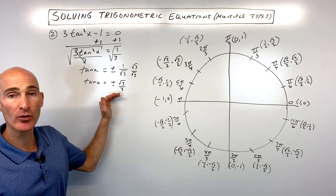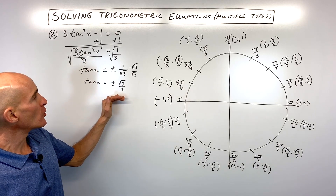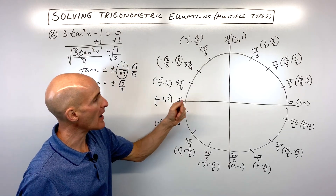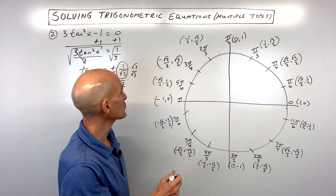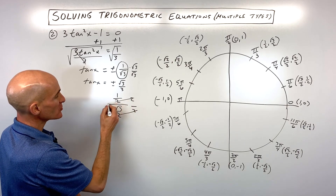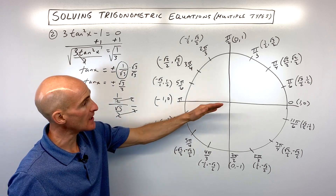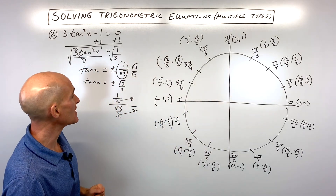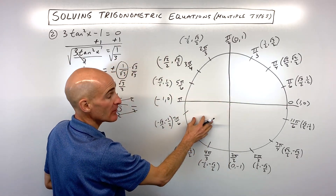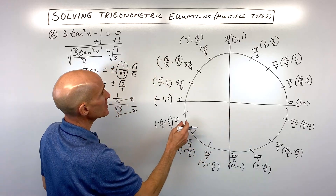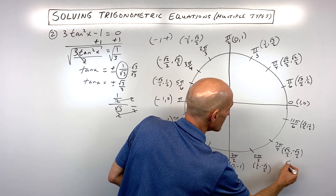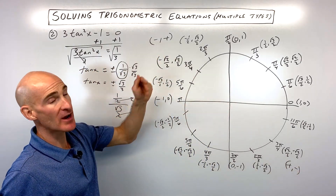On the unit circle, tangent is the y-coordinate divided by the x-coordinate. We need to find where tangent equals 1/√3, or rationalized, √3/3. At π/6, you get (1/2) ÷ (√3/2), and multiplying numerator and denominator by 2 gives 1/√3. So it's a π/6 or 30-degree reference angle. Tangent is positive in the first and third quadrants, and negative in the second and fourth — because in the second quadrant x is negative and y is positive, while in the fourth it's the reverse.